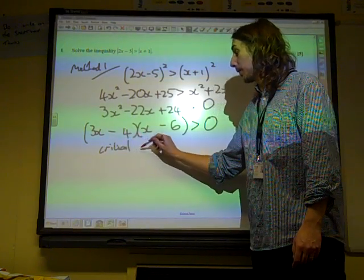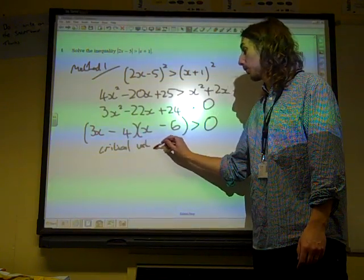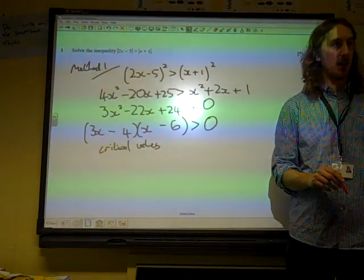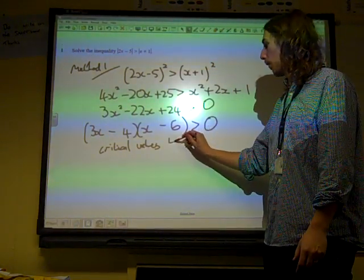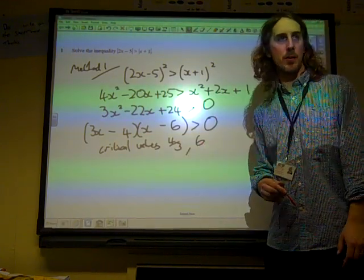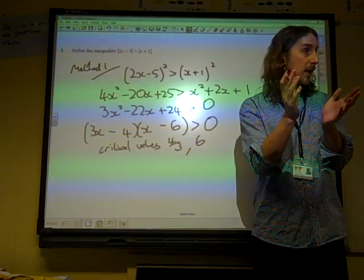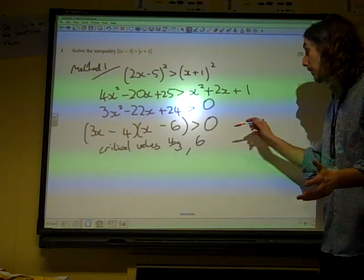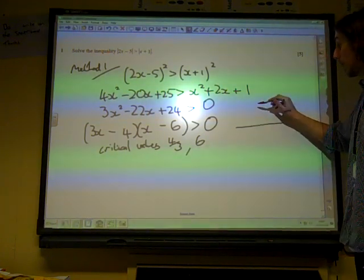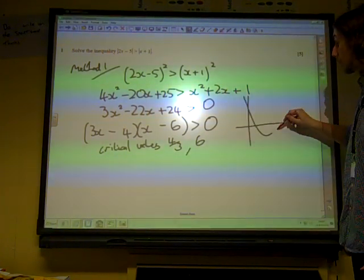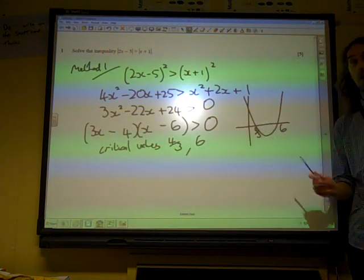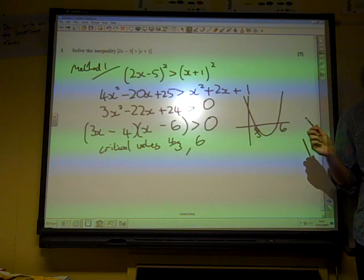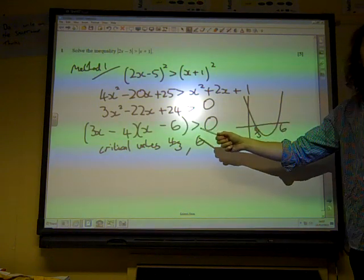Now, I always tell the lower 6th when I'm doing this, that when we've got the inequality and we've factorized it, we call these critical values at this stage. We've got 4 thirds and we've got 6 as our critical values, and we've got to turn that into the inequality. So we do a very quick sketch of what we're looking at. Now, we've got a curve that crosses at 4 thirds and 6, and we want to know when it is bigger than 0.